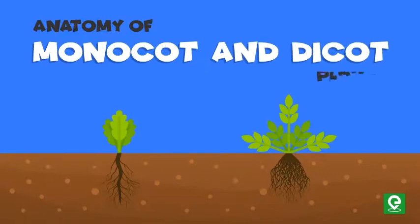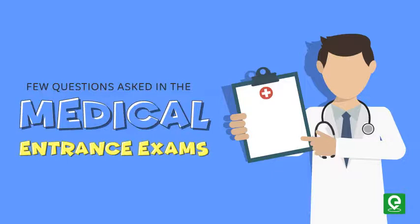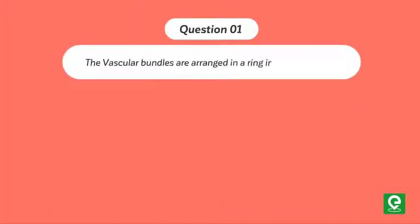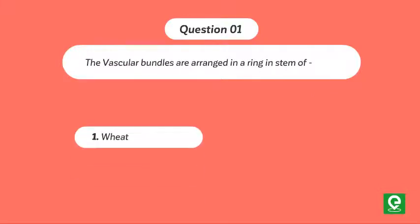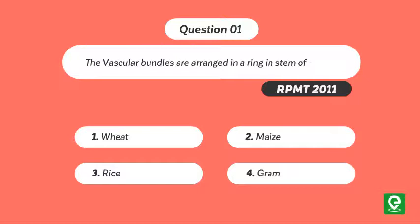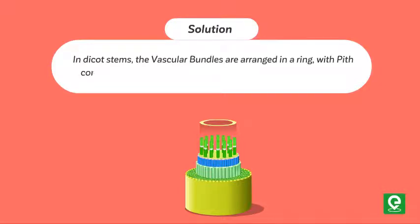This concludes our video on anatomy of monocot and dicot plants. Let's answer a few questions asked in medical entrance exams. Question 1: The vascular bundles are arranged in a ring in the stem of which plant — wheat, maize, rice, or gram? This question was asked in RPMT 2011. Solution: In dicot stems the vascular bundles are arranged in a ring with pith concentrated at the center, such as in gram. Hence option 4 is the correct answer.